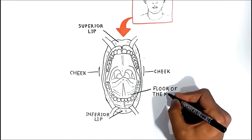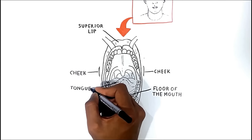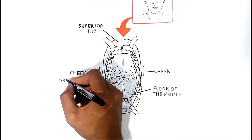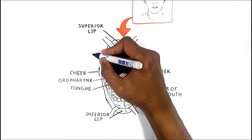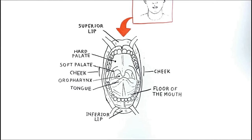The floor of the mouth and mobile tongue inferiorly, the oral pharynx posteriorly, and a hard and soft palate superiorly.